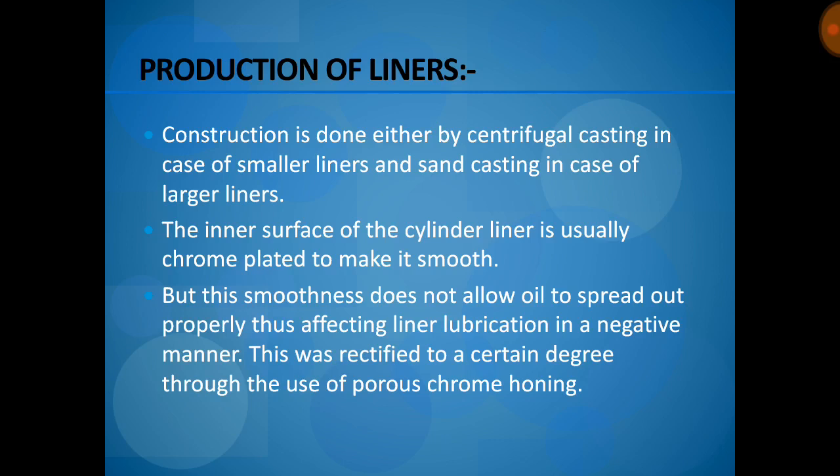Liners are produced by sand casting as well as centrifugal casting. If you want to produce small liners, you prefer centrifugal casting. For large liners used in huge machines such as turbines, they must be produced by sand casting only. The inner surface of the cylinder liner is usually chrome-plated to make it smooth and to provide wear resistance. However, the smoothness does not allow oil to spread properly, so pores are made so that the oil can spread evenly inside the surface of the cylinder.